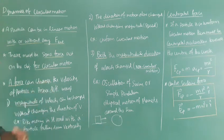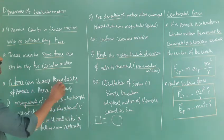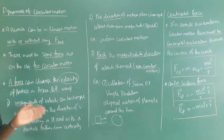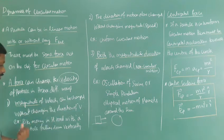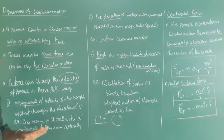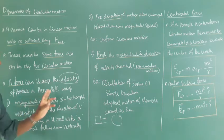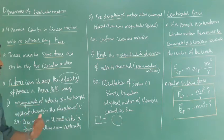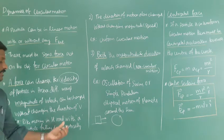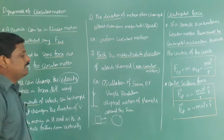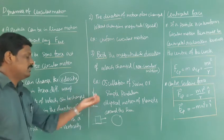Force acting on a particle changes its velocity in three different ways. Velocity is a vector — it has both magnitude and direction. First case: the magnitude of velocity can be changed without changing the direction. For example, a bike moving in a straight road with acceleration — by applying force its velocity changes but direction remains the same. Another example is a particle falling down vertically, where due to gravitational force its velocity changes.